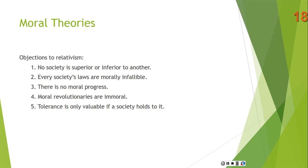Fourth: moral revolutionaries are immoral on relativism. Whatever the society says is right, is right. This means Martin Luther King Jr., in fighting for desegregation, was being immoral, because he was going against the moral code of the society in which he was living. If morality is determined by the society and MLK Jr. was going against that morality, he was doing something morally wrong. But I think we all can say that Martin Luther King Jr. was fighting for what was right, and if we can say that, then relativism is false.